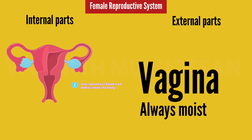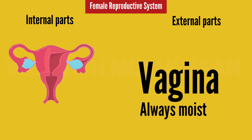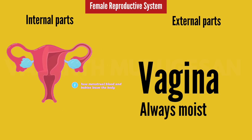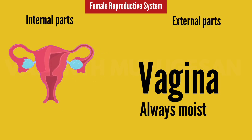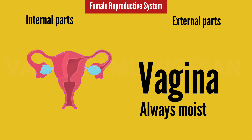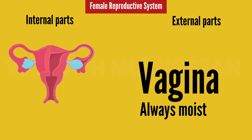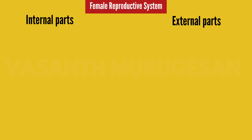Urinary tract infection is very common for both males and females. The vagina maintains moisture, and that is because of the mucous membrane. Mucous membranes maintain mucous secretion, and that moisture will protect the vagina.